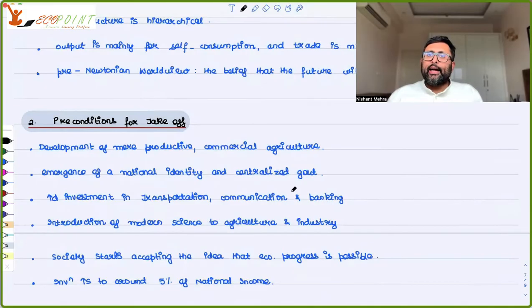Before society actually takes off, there are certain conditions that have to be fulfilled. One condition is that the production in agriculture becomes more commercial. The production is taking place for market, not for self-consumption. If the production has to take place in the market, it has to be productive also. So productivity also increases. That is a first precondition.